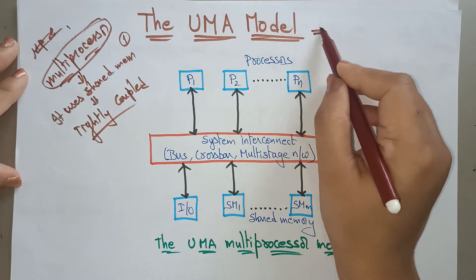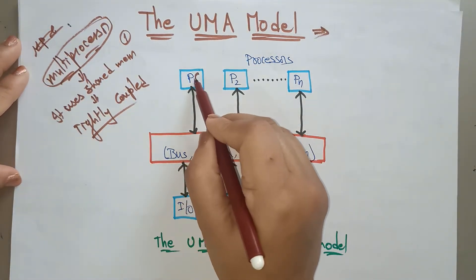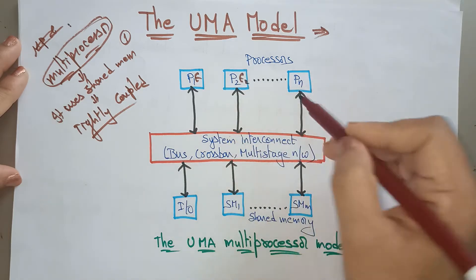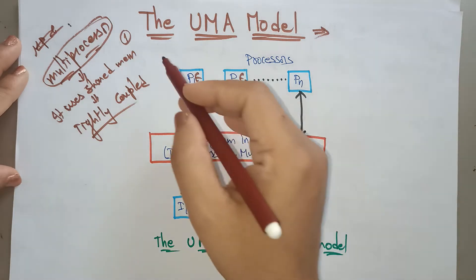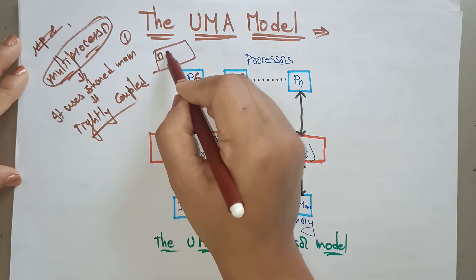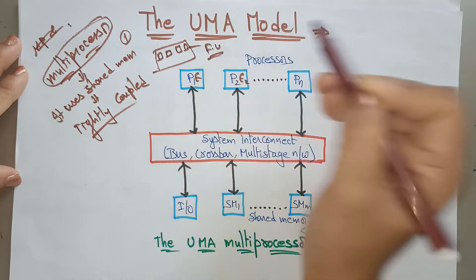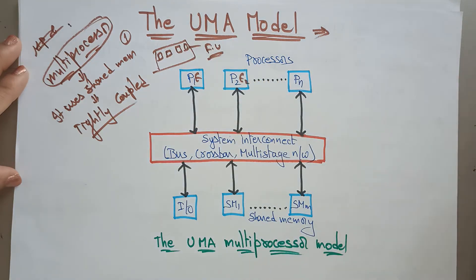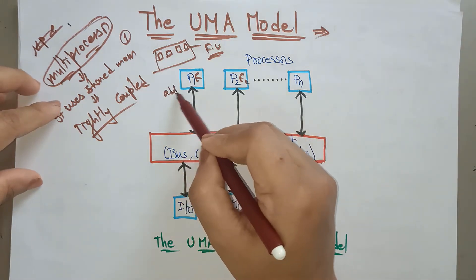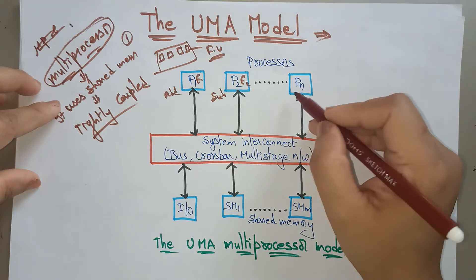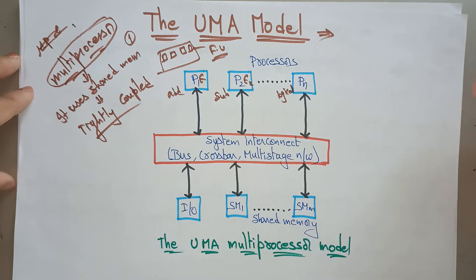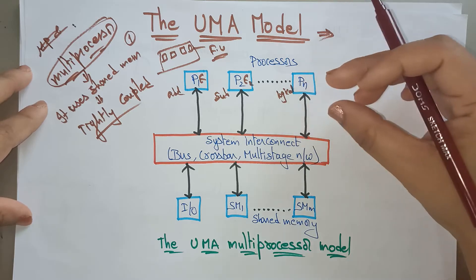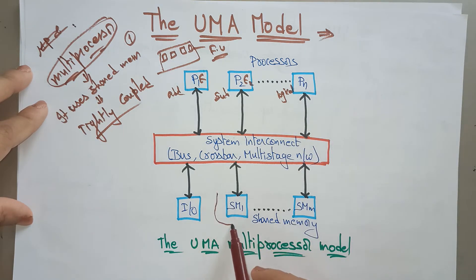Coming to the UMA model — all processing elements, PE1, PE2, and so on, are present. Processing elements are nothing but the processor or some element performing the execution. Inside the processor you have many processing elements, which are functional units doing calculations. One processing element does addition, another does subtraction, another does logical operations. All these processing elements use only one memory — the shared memory.